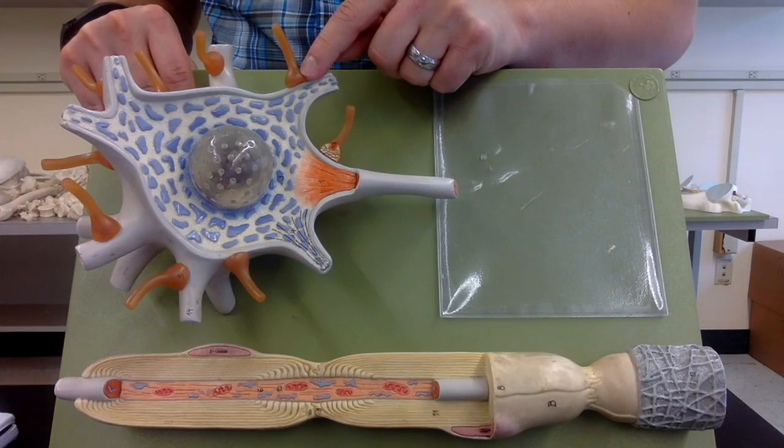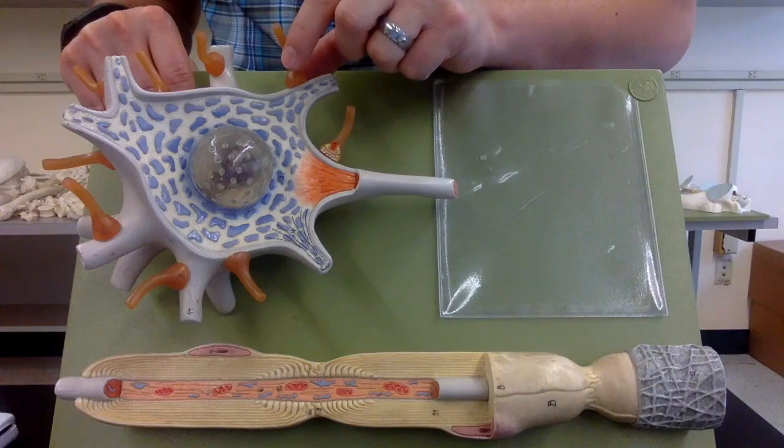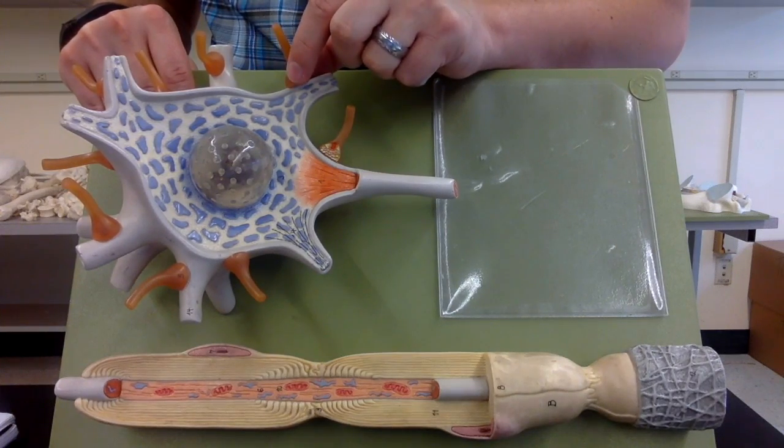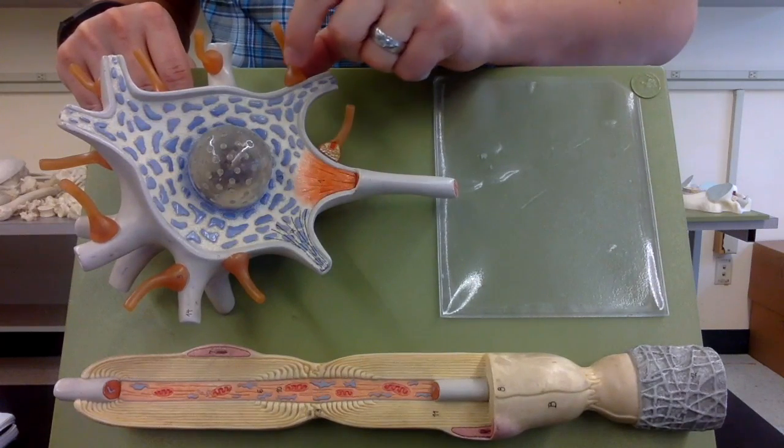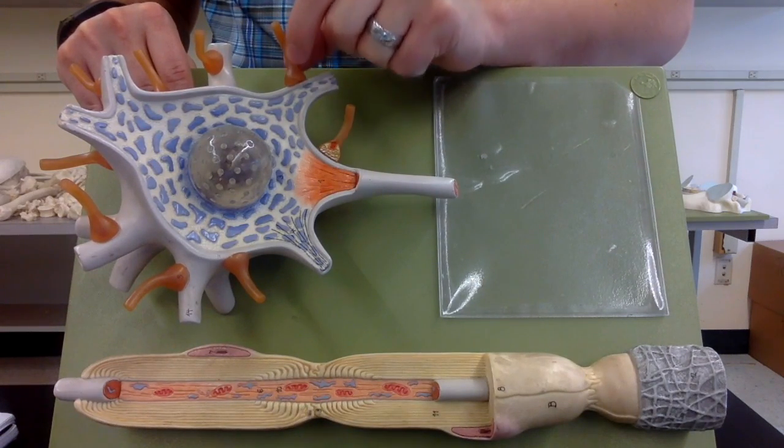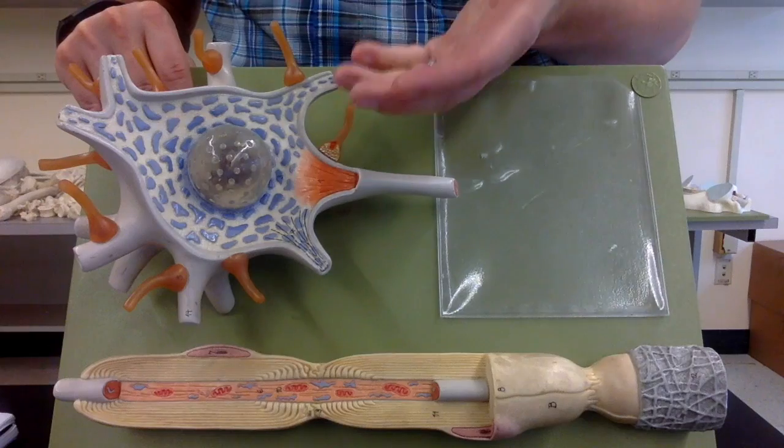And then at the end of each of them they have a knob known as the synaptic knob or synaptic terminal. So that is what's actually going to send neurotransmitter to the next neuron. So this is the next neuron.